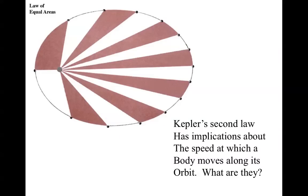This law has implications about the speed of a body as it moves along its orbit. One important thing to remember is that when you're on the major axis, the velocity when you're close to the sun is proportional to the distance ratio compared to when you're as far away from the sun as possible.